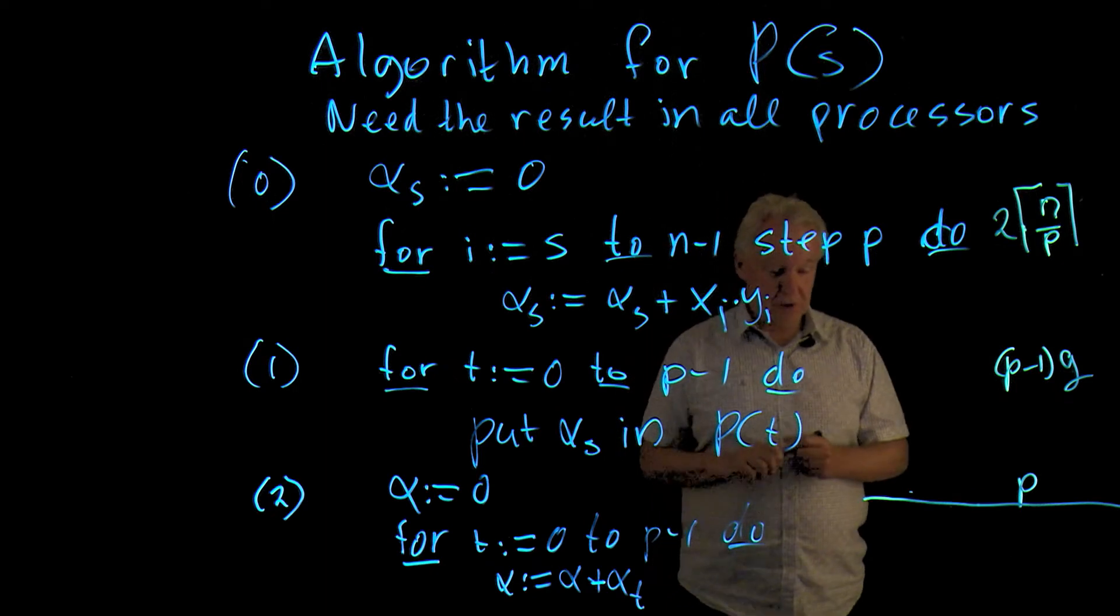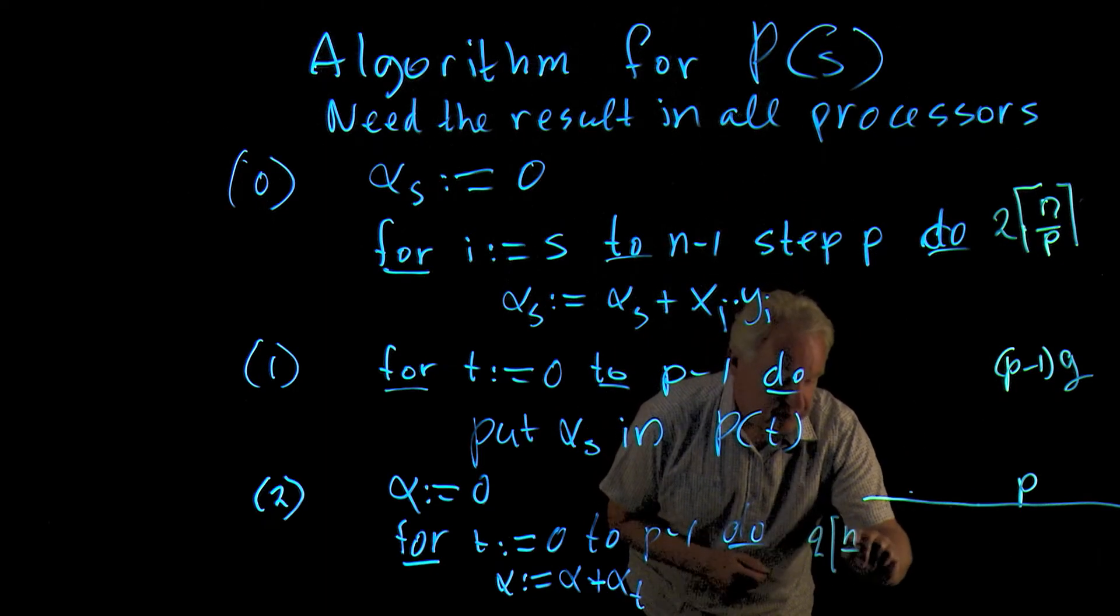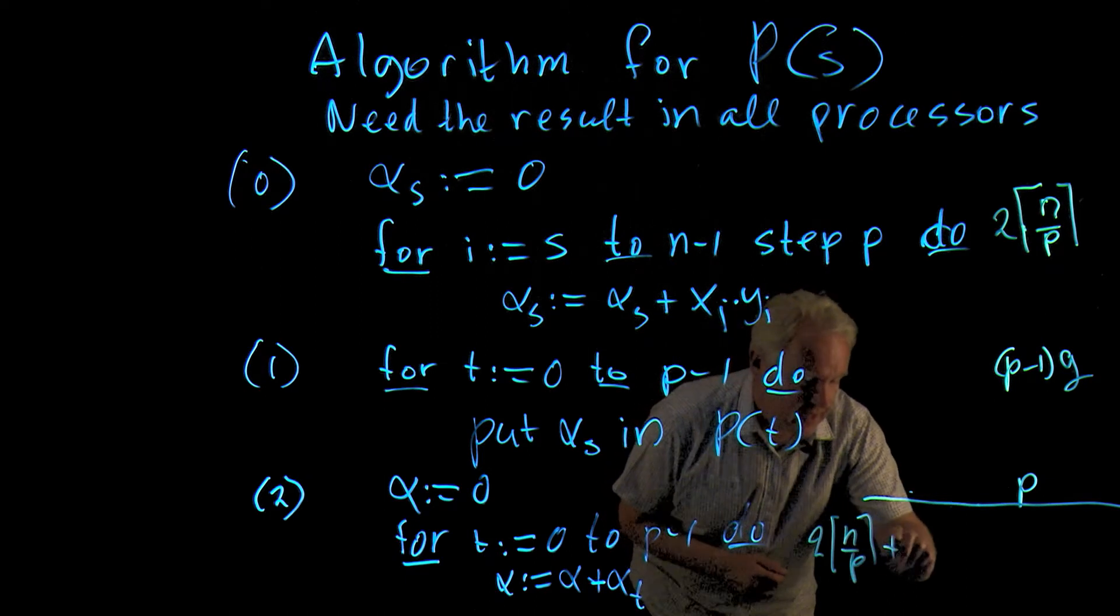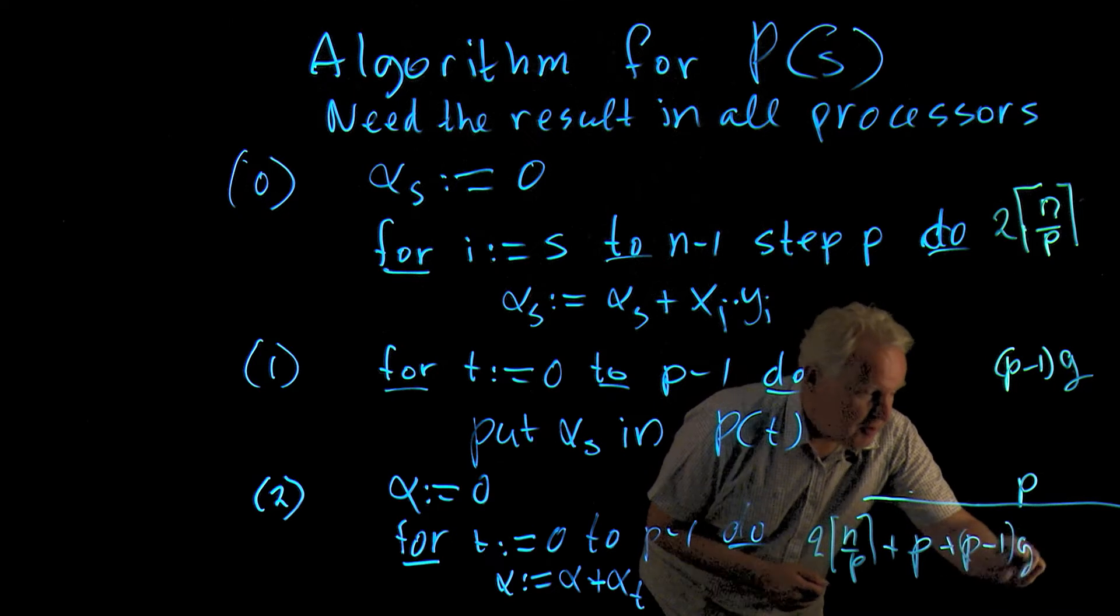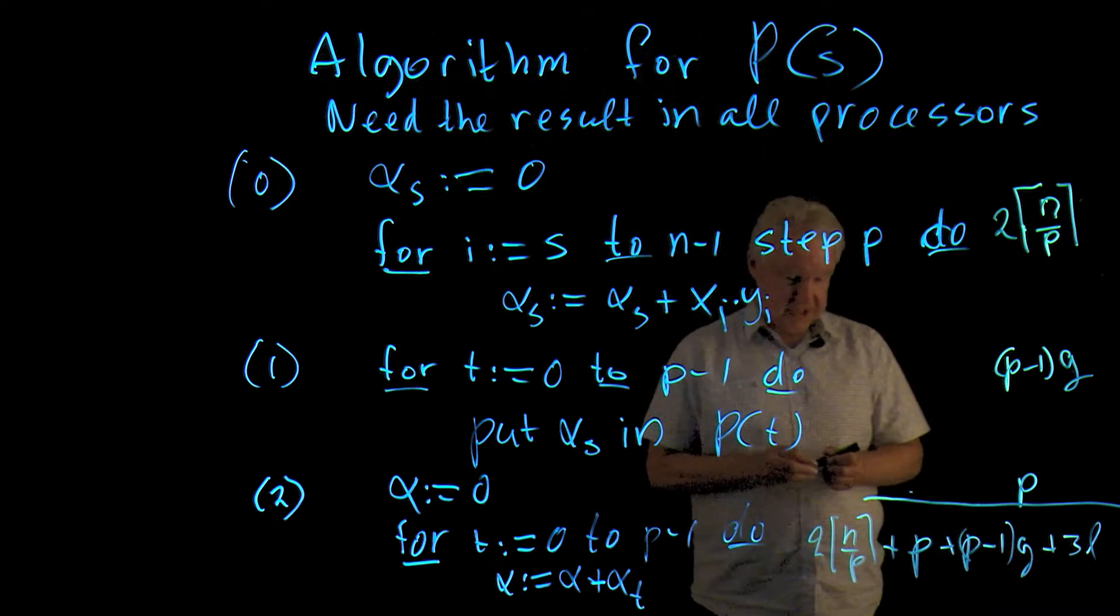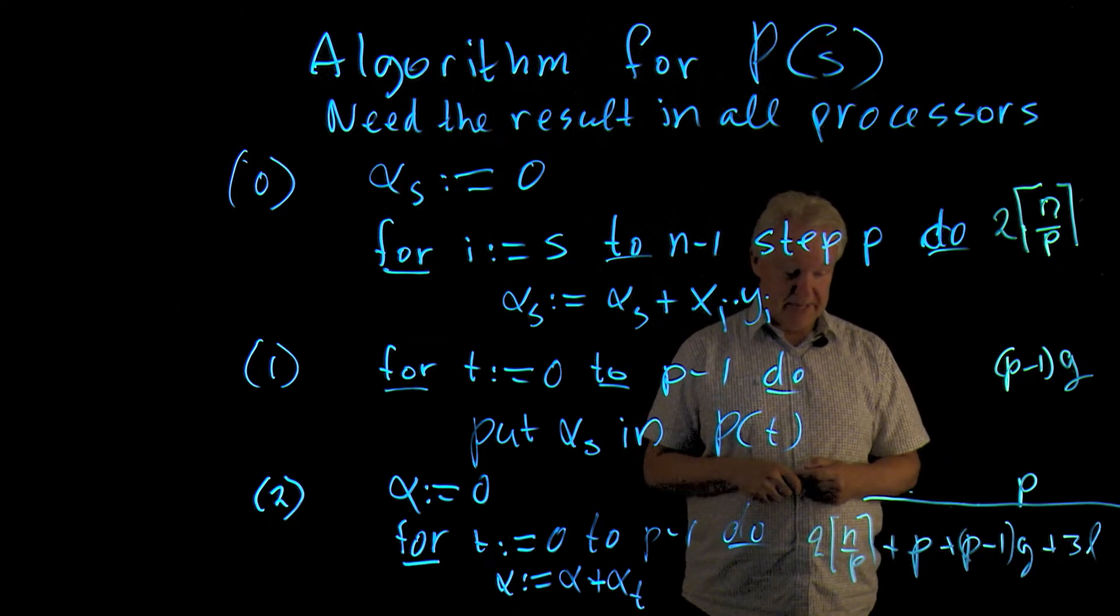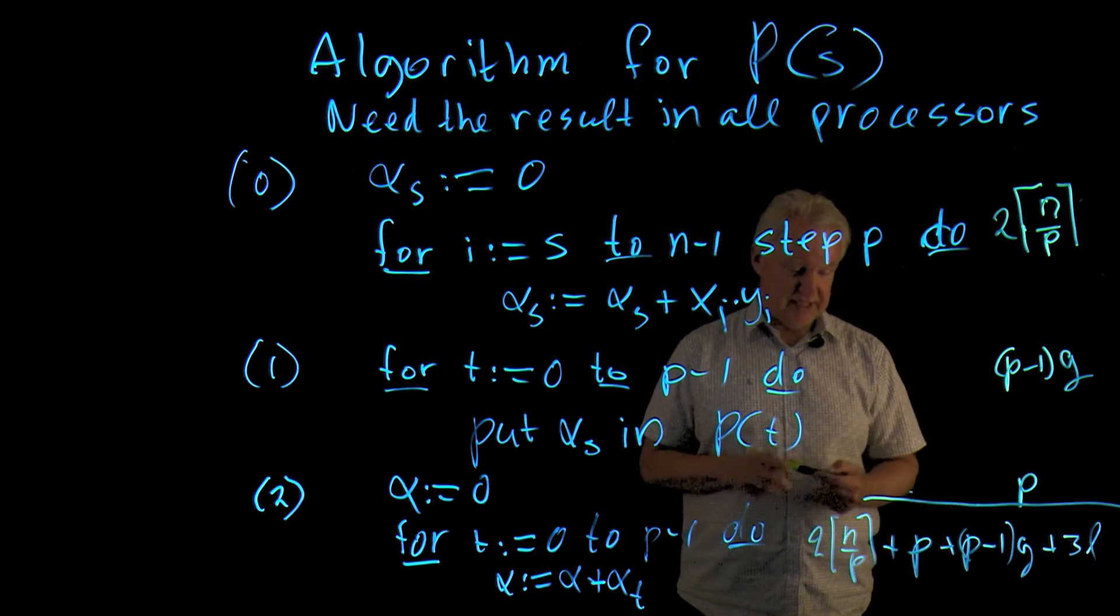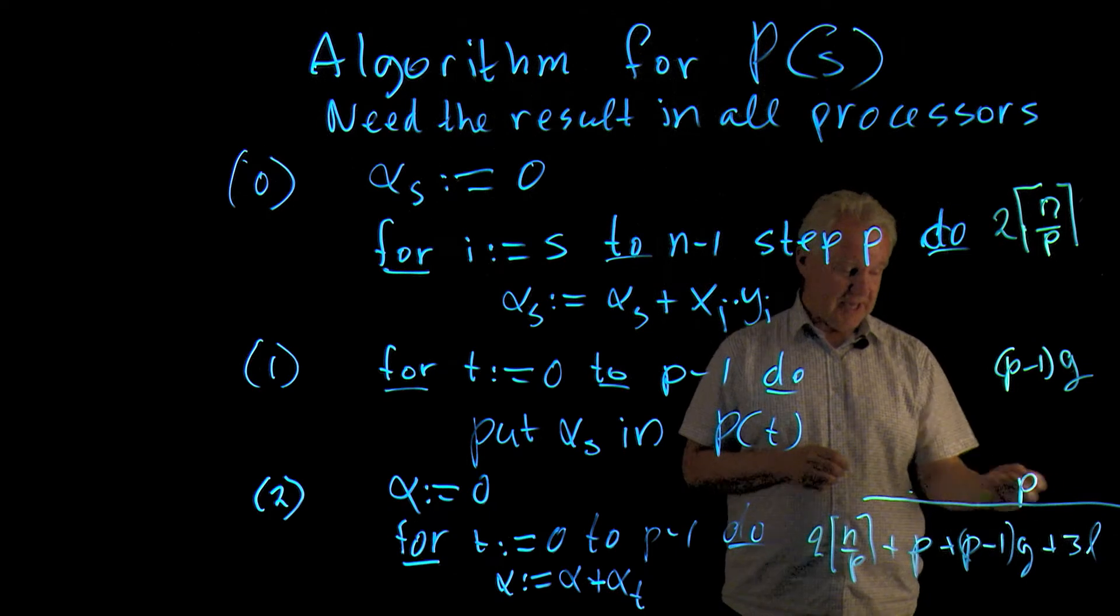So it's an h relation with h equals p minus one. And the last super step costs p because we just add up p results. So the total cost then equals two n over p, the ceiling, plus p plus p minus one g, plus now I add the l's of the synchronization.